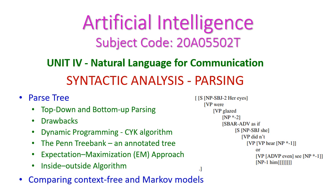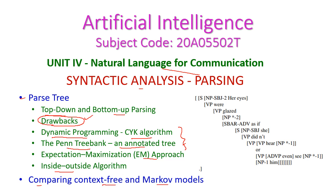In this artificial intelligence class we will see syntactic analysis, which is from the fourth unit on natural language processing. In today's class we will see what is parsing, two approaches — top-down parsing and bottom-up parsing — and the drawbacks of these two parsing techniques. After that we will move to dynamic programming, covering the CYK algorithm, the Penn Treebank, annotated trees, the EM approach, and the inside-outside algorithm. Finally, we will compare context-free and Markov models.